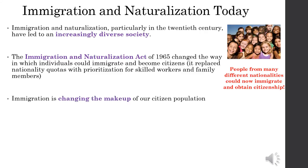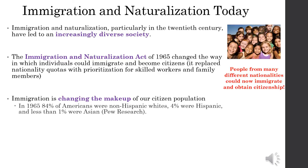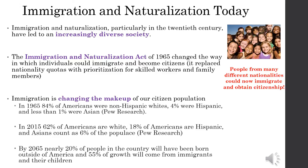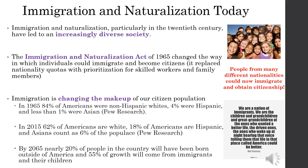Immigration is changing the makeup of our citizen population. In 1965, 84% of Americans were non-Hispanic whites, 4% were Hispanic, and less than 1% were Asian. In 2015, 62% of Americans are white, 18% are Hispanic, and Asians count as 6% of the population. By 2065, nearly 20% of people in the country will have been born outside of America, and 55% of population growth will come from immigrants and their children.